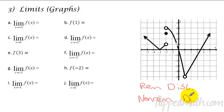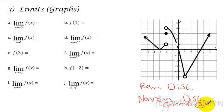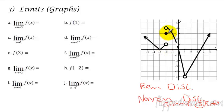If you say that it is non-removable discontinuity, then there are two types. Number one would be that it is a jump, and then number two would be an infinite discontinuity — meaning there's a vertical asymptote. So we have two types: removable and non-removable. And if there's ever a break — if you have to lift up your pencil to keep drawing it — then it's a discontinuity.